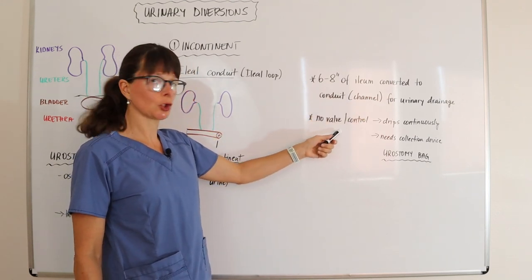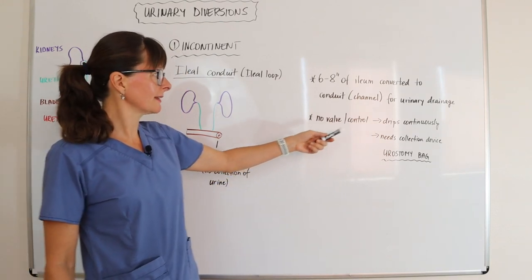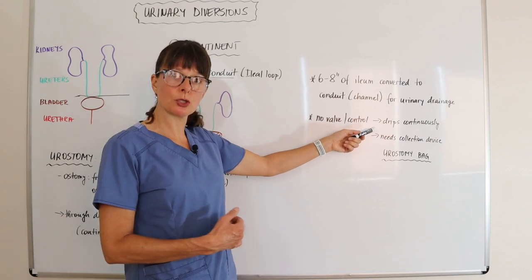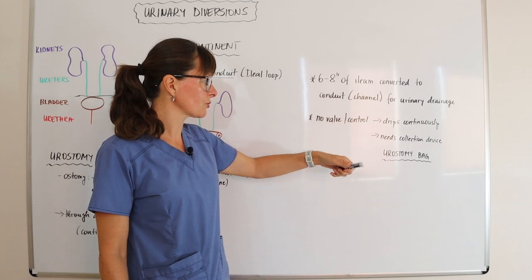There is no valve or control such as in normal bladder control, which means that this ileal conduit will drip continuously urine to the stoma at the abdominal wall of the patient.